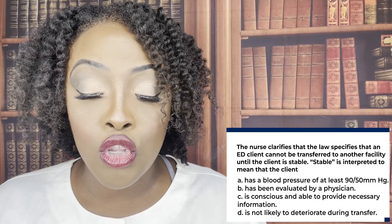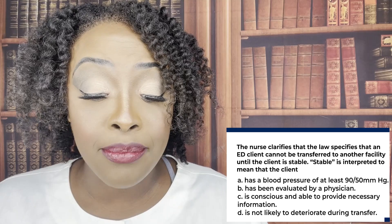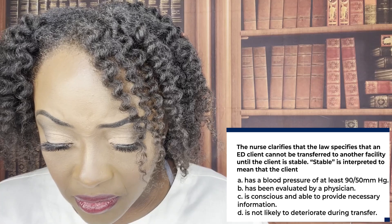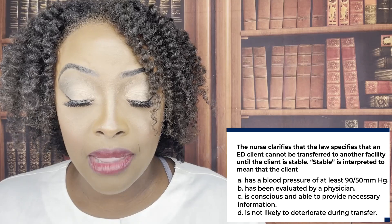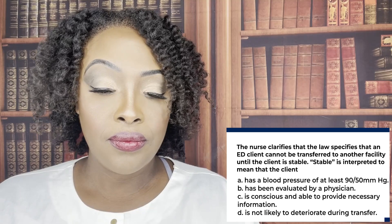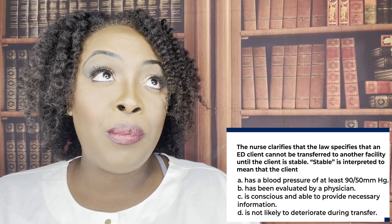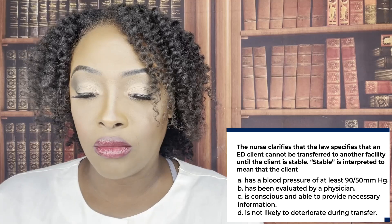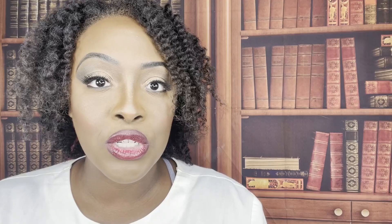The nurse clarifies that the law specifies that an emergency department client cannot be transferred to another facility until the client is stable. Stable is interpreted to mean that the client: A, has a blood pressure of at least a certain value; B, has been evaluated by a physician; C, is conscious and able to provide necessary information; or D, is not likely to deteriorate during transfer. The correct answer is D. Legally speaking, for a patient to be stable for transfer means that during that transfer, it is not likely that their condition will deteriorate.